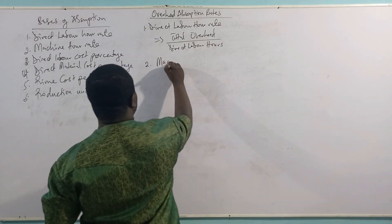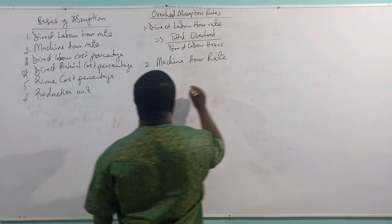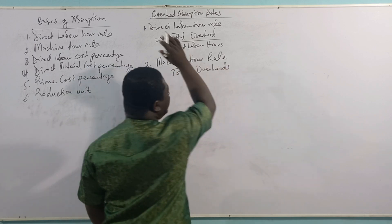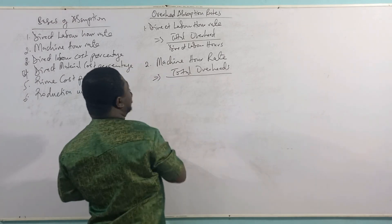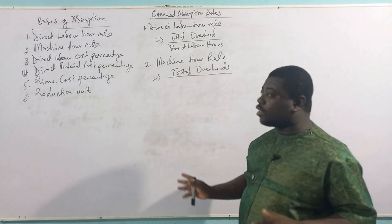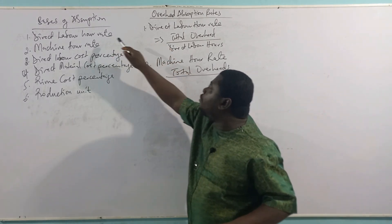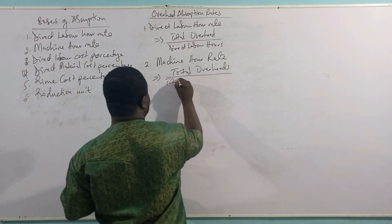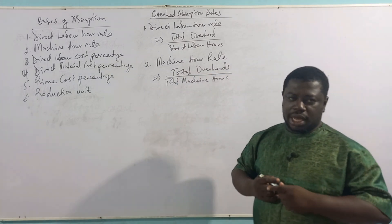Now let's look at the machine hour rates. If you want to absorb based on machine hours instead of human hours, that is similar to what we just did. The formula begins the same way — all the formulas will begin with total overheads, as that is what we want to establish the rate for. The numerator will always be total overheads or budgeted overheads; however, the denominators will change. So for machine hour rate, it will be total overheads ÷ total machine hours, and whatever answer you get is your rate per machine hour.